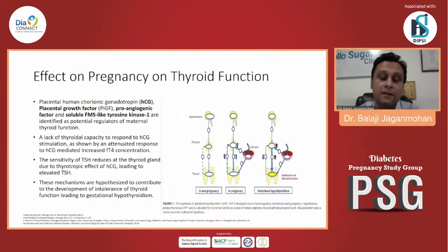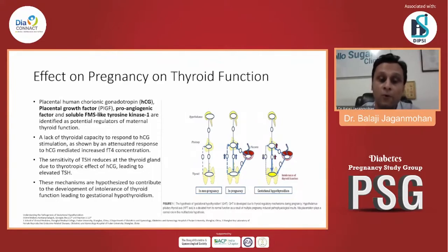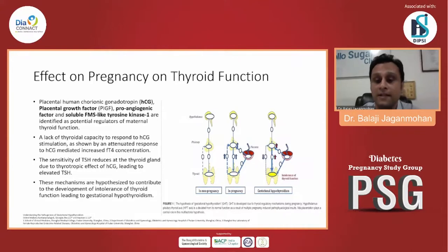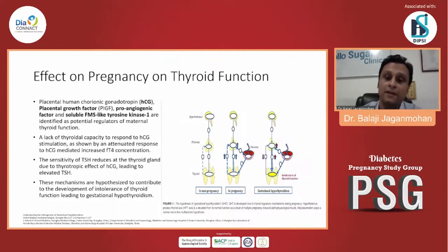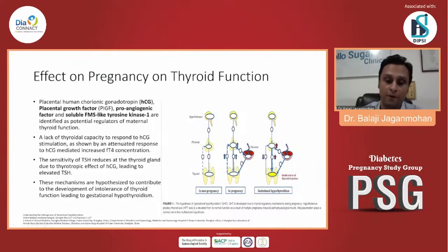It is also clearly shown the role of placental hormones — placental human chorionic gonadotropin, placental growth factor through angiogenic factor, and soluble FMS-like tyrosine kinase-1 factor. These hormones are known to reduce the sensitivity of TSH to the thyroid gland, meaning TSH will not have an adequate stimulatory effect to release T3 and T4. The end result is reduced T3 and T4 secretion, and TSH eventually compensates by going up.